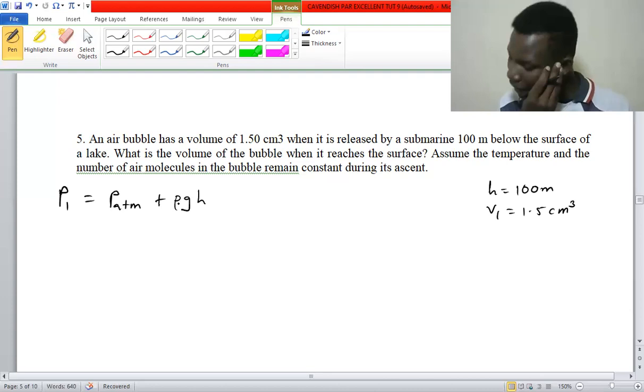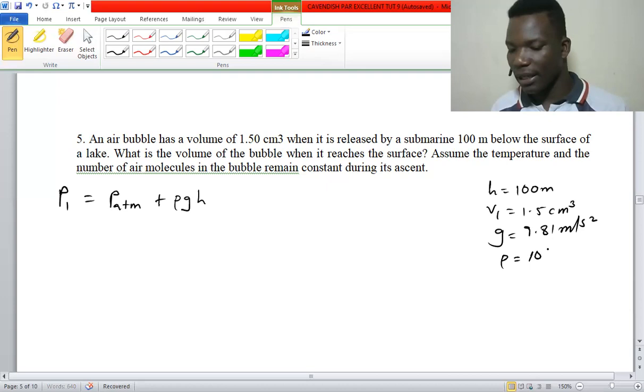This is rho (density), gravitational acceleration, and height. So we have gravitational acceleration 9.81, and then we have also density of water, which is 10 to the 3 kg per cubic meter.